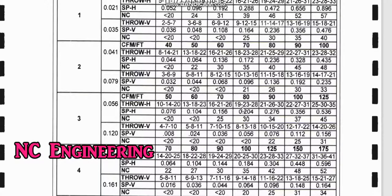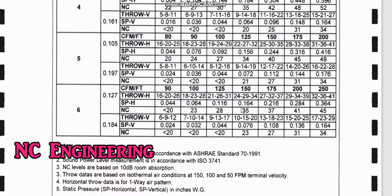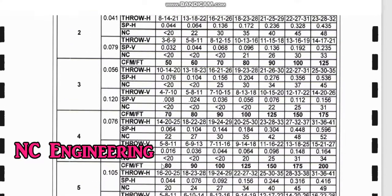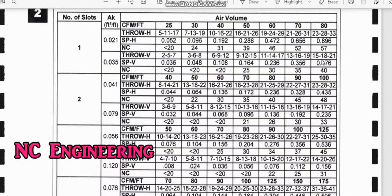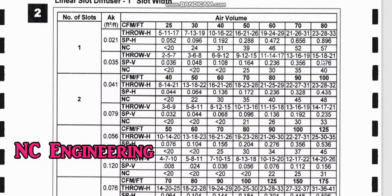These are the very easy methods to select grills and diffusers. You can determine how much length you need as per your drawing and design requirements. For other items like louvers, you can see from the table the CFM, velocity, and noise level to find the required size. I hope this exercise is useful for you. In the next video we will discuss the next topic. Thank you very much — please subscribe to our channel.